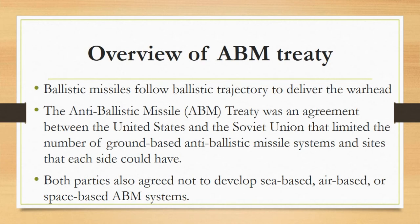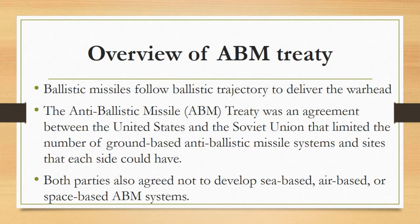First of all, an overview of the ABM treaty. To understand the anti-ballistic missiles treaty, it is inevitable to understand what ballistic missiles are. Ballistic missiles are basically that kind of missiles which follow a ballistic trajectory to deliver one or more warheads on a predetermined target. During the Cold War period, both the United States and USSR were standing at the edge of using these missiles against each other. Both sides were also continuously increasing their anti-ballistic missile capacities so that they could stop each other's attacks. This was becoming a great reason for arms race during the Cold War period, therefore they signed the anti-ballistic missiles treaty.